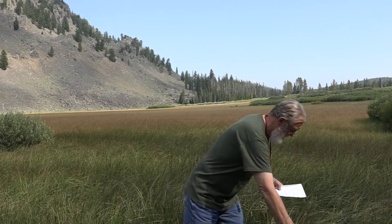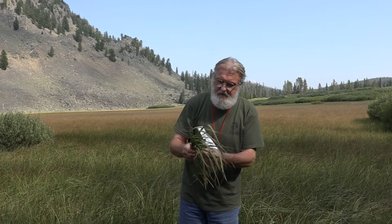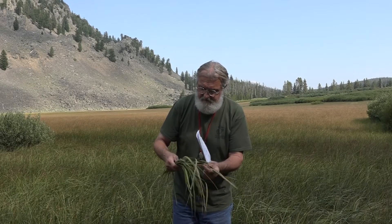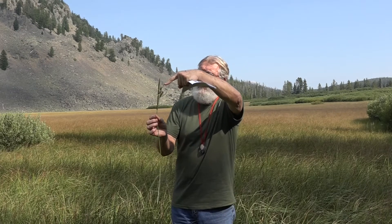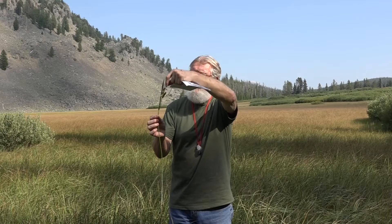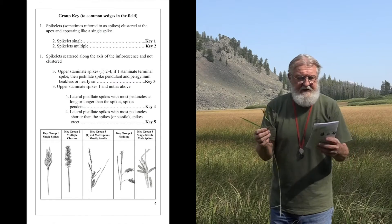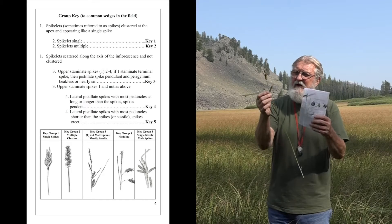Then we go to group three. Pulling one of these out — here we have the female spikelets and on top two or three narrow male spikelets. I actually have a male and female on the same spikelet with the male on top. This would be group three. You can key it or look at the photo.